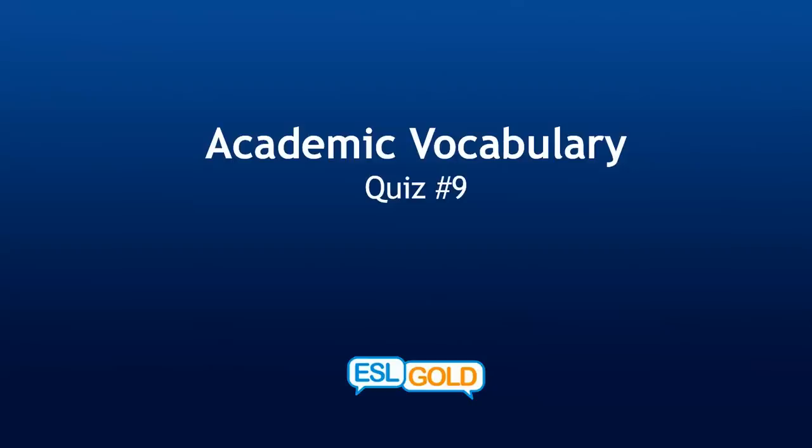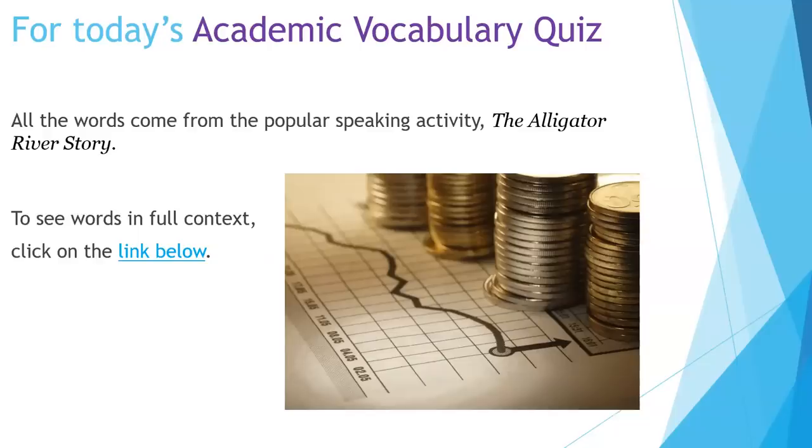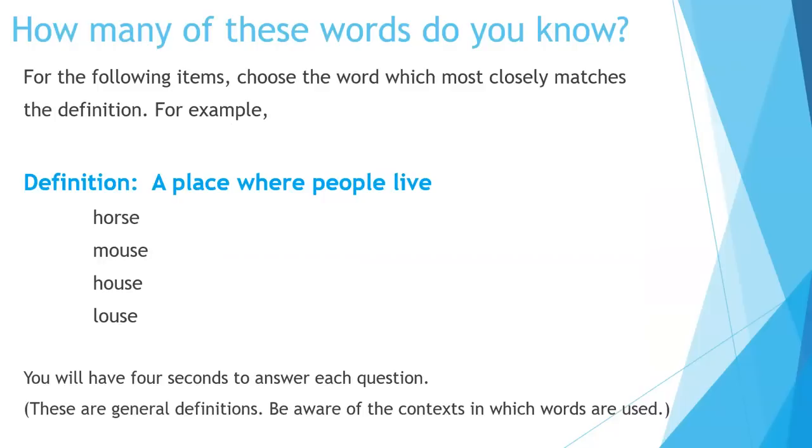Academic Vocabulary Quiz 9. For today's Academic Vocabulary Quiz, all the words come from the popular speaking activity, The Alligator River Story. To see words in full context, click on the link below. How many of these words do you know? For the following items, choose the word which most closely matches the definition. For example, definition: a place where people live. The correct answer is house. You will have four seconds to answer each question. These are general definitions. Beware of the context in which words are used.